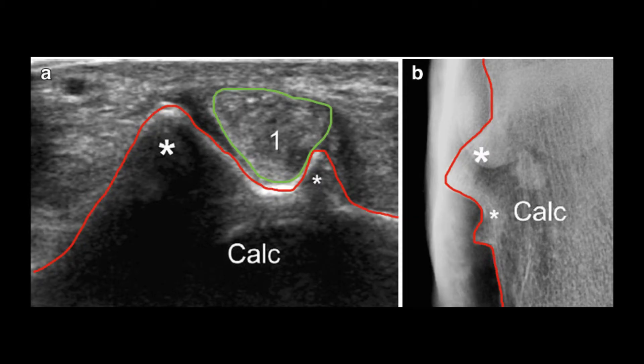This is a great axial image to assess the peroneus longus groove of the calcaneus. You can also note that the peroneal tubercle is hypertrophied in this case, and you can use the x-ray on the right to correlate the two images together.